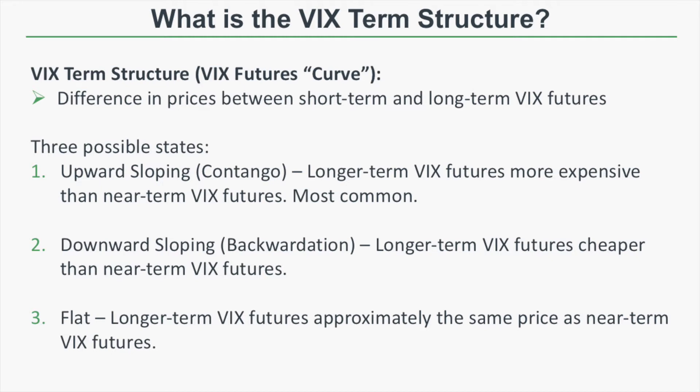There are three possible states for the VIX term structure. The first is upward sloping, which is referred to as contango. Contango means that longer-term VIX futures are more expensive than near-term VIX futures. This is the most common VIX term structure because contango occurs when market implied volatility is really low.